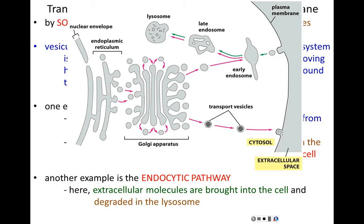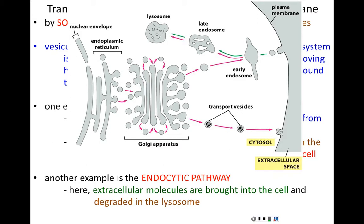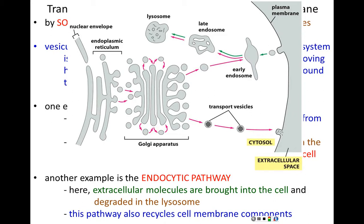Another example is the endocytic pathway — the eating part. Extracellular molecules are brought into the cell, degraded by the lysosome, and those broken-down bits of nutritious molecules are released from the lysosome into the rest of the cell, where they can be used for cellular energy or cellular processes. This pathway is also used to recycle broken parts of the cell — any component that is faulty, aged, or no longer working properly can also be degraded in the lysosome down to its basic building blocks and recycled.